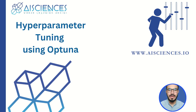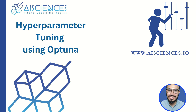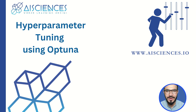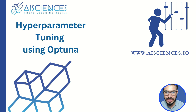Hyperparameter tuning is a very important thing in machine learning, but it is a very time-consuming activity. Today I am going to tell you an automated way by just writing a few lines of Python code, and you can automate the whole hyperparameter tuning process.